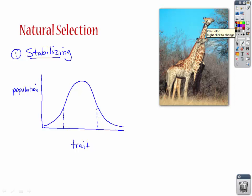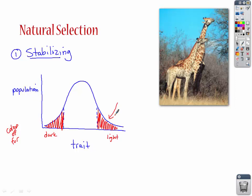You have most of your population in the center. Let's say our trait in this case is color of fur, ranging from dark to light. Most of your species is going to fall in the middle, and then you have your outliers — your extremes. Here you have extremely dark, and here you have extremely light. In stabilizing natural selection, the traits on the extreme ends are not helping that species survive, so they're going to be the ones to die out. What you're left with is a population that becomes more homogeneous with the same trait.